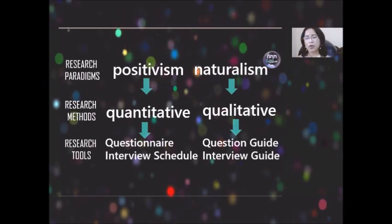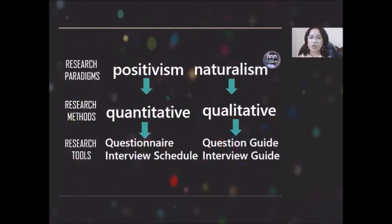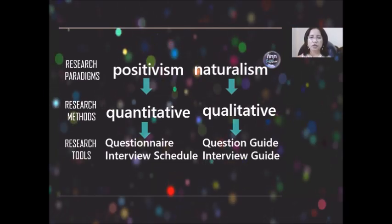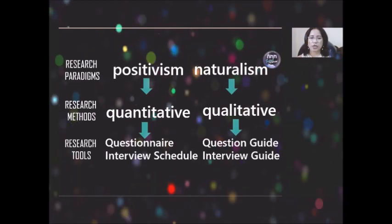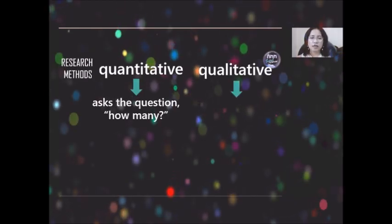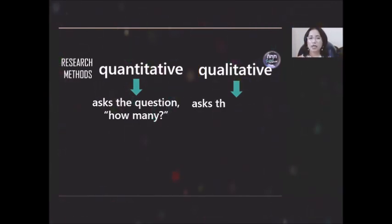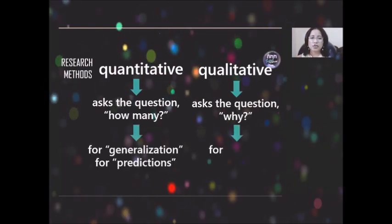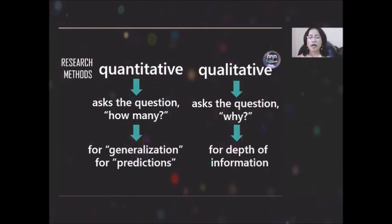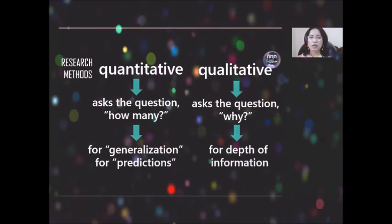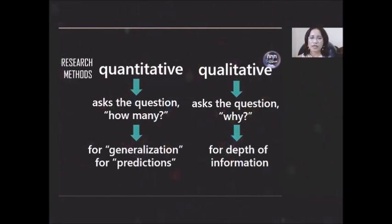With naturalism or qualitative, the guide is just used. It's not so detailed questions and it's usually used on a face-to-face basis. You can't just leave it with a respondent. For quantitative, there is the asking of the question, how many. Qualitative asks the question, why. This is for the purpose of generalization or for predictions. With quantitative, you can engage to as many respondents as you can depending on the scientific result of your sampling, which we will learn later.